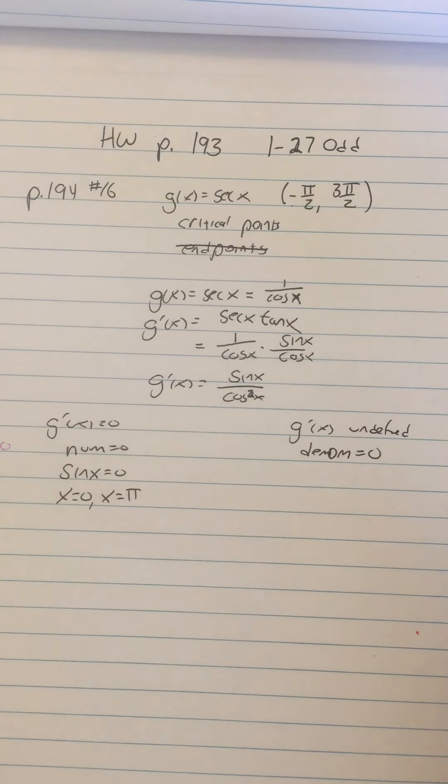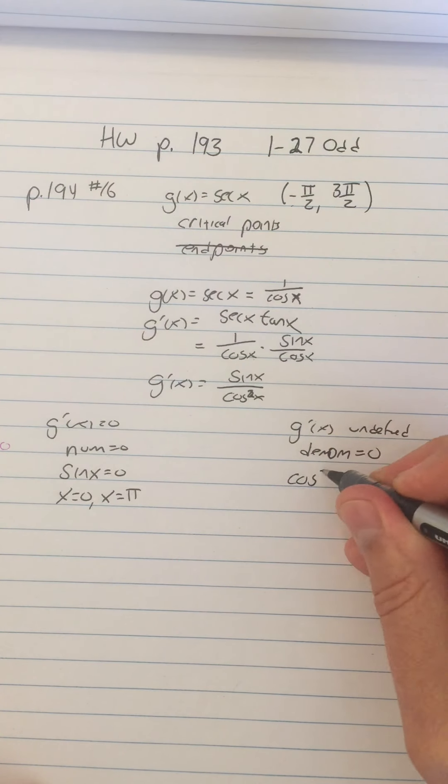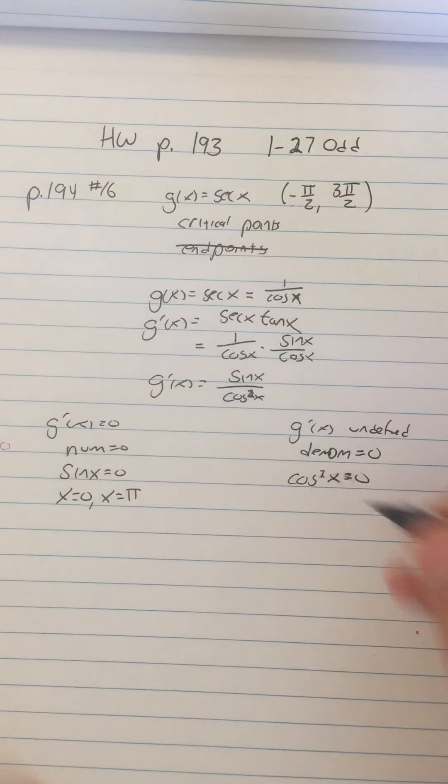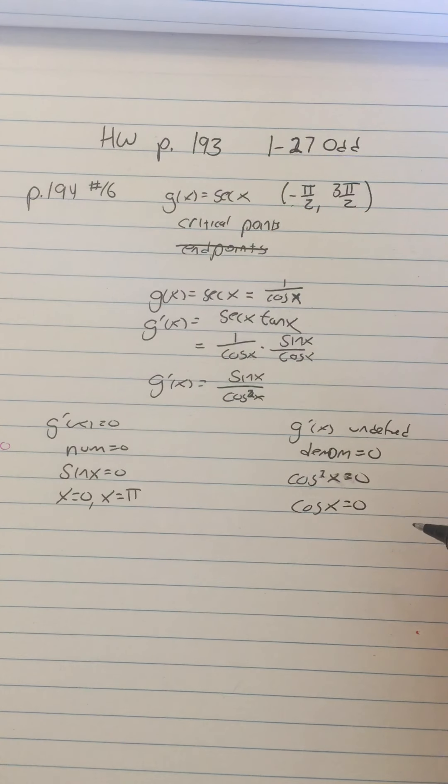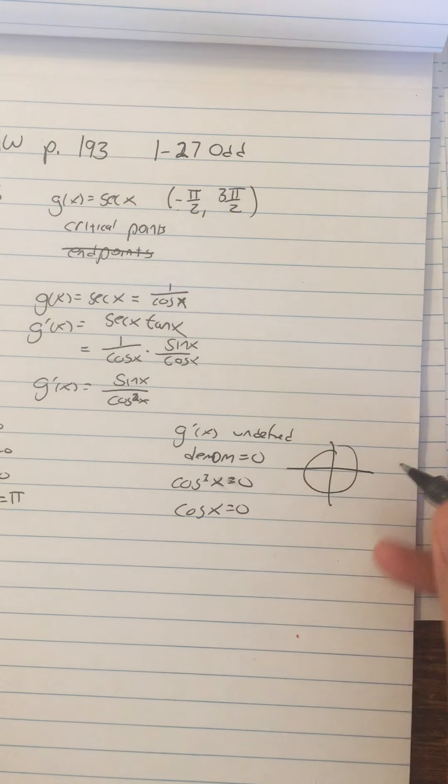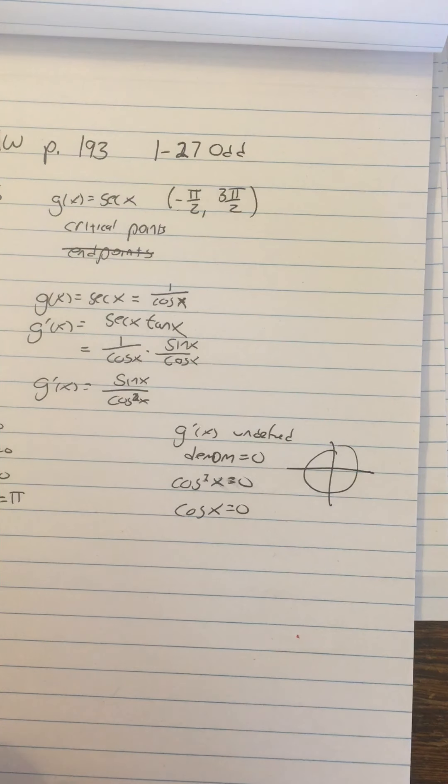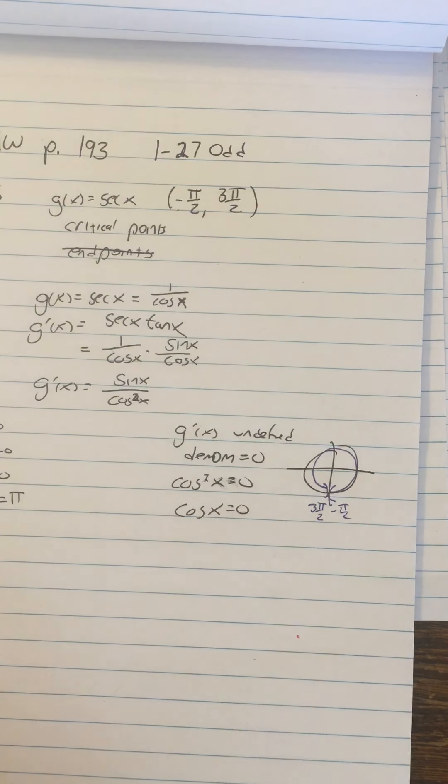But let's say I didn't notice that. What if I didn't notice that? Then I would say, what happens when cosine squared x equals zero? That's my denominator equals zero. Well, just take square root of both sides and then cosine x equals zero. Then I can look at the unit circle again and say, where is the cosine equal to zero?